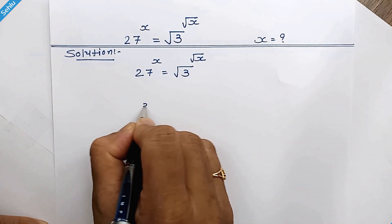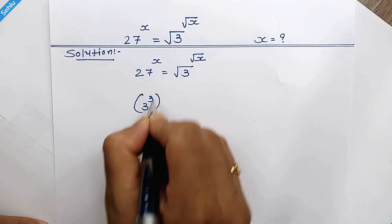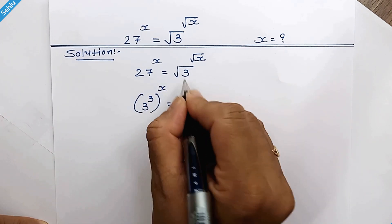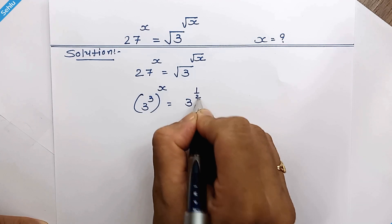27 is 3 cube whole to the power x and square root can be written as 1 over 2 as an exponent.